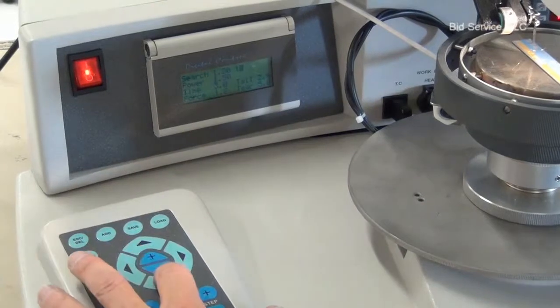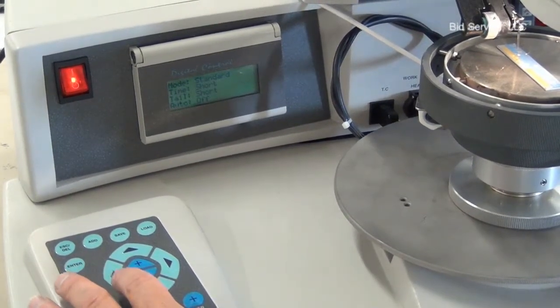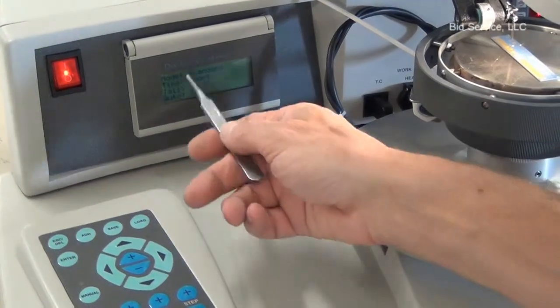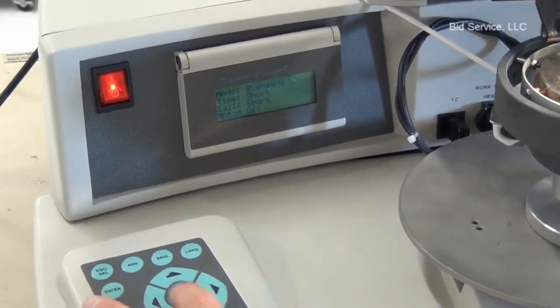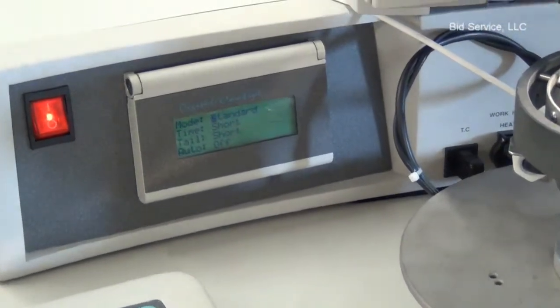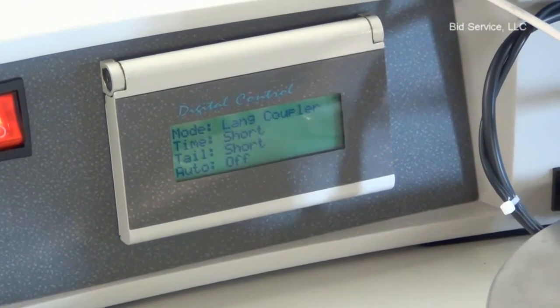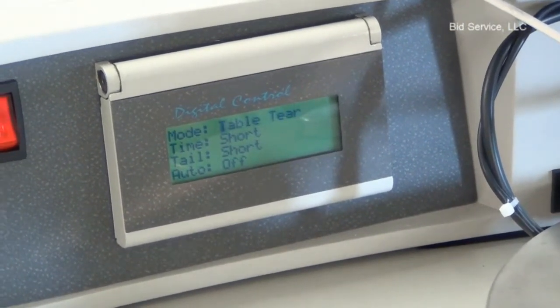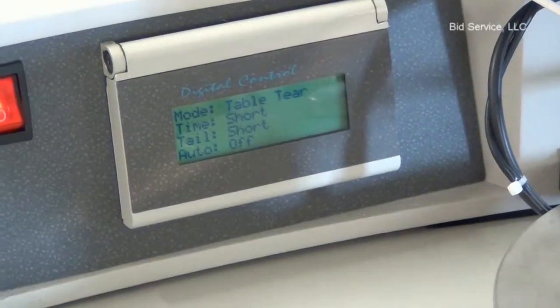Now we're on bond position two. I just want to show you here. The mode here is standard. You have two other options. Blank coupe layer. Table tear. I'm going to set it up for table tear here.